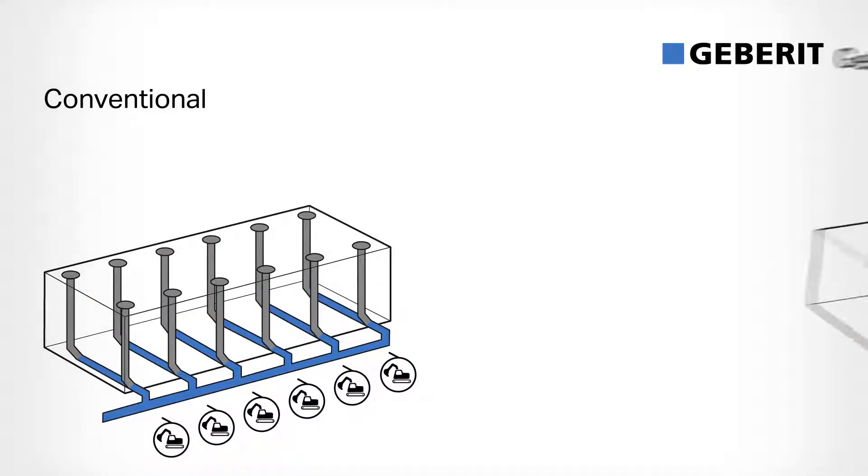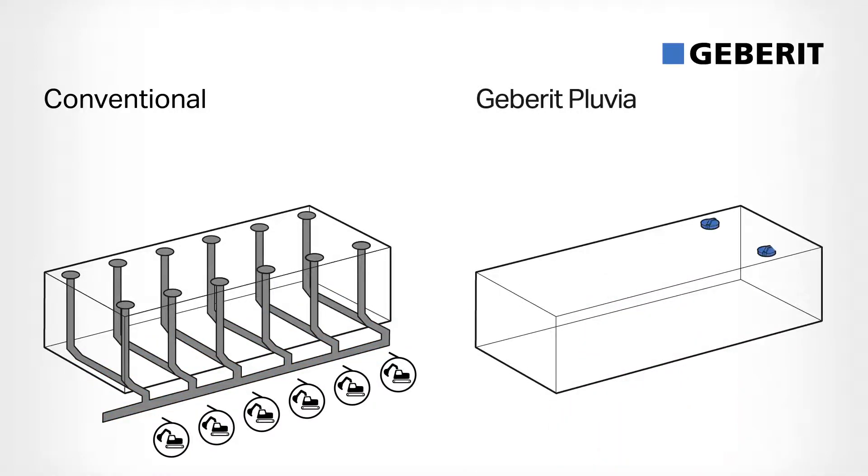The Geberit Pluvia system, however, requires far fewer roof outlets. And it has smaller pipe dimensions, fewer pipes, fewer discharge stacks, and fewer connections to the sewage system.